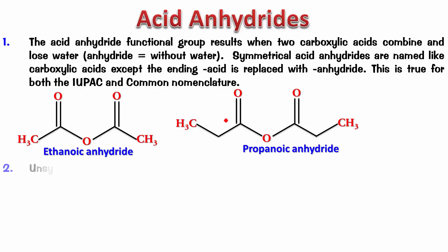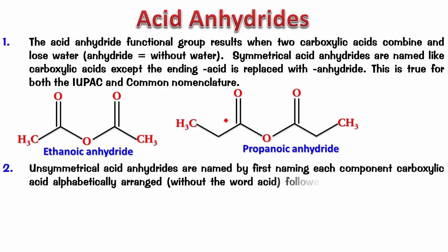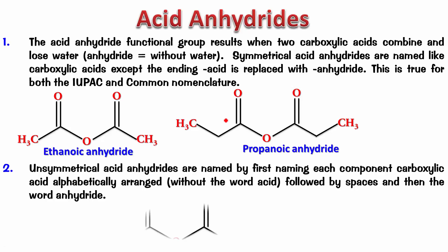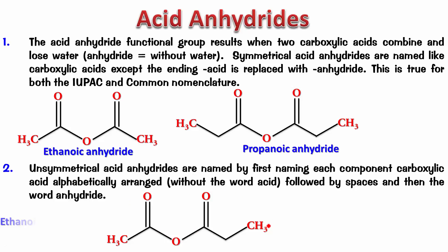For unsymmetrical anhydrides, they are named by first naming each component carboxylic acid alphabetically without the word 'acid', followed by spaces, then the word 'anhydride'. Pause the video and try this example. On one side we have ethanoic, on the other side we have propanoic. Since ethanoic comes before propanoic alphabetically, this is ethanoic propanoic anhydride.